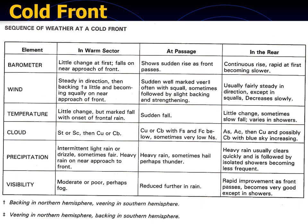At a cold front, weather includes rain and perhaps thunder, which increases during passage and then turns to showers. Precipitation in a cold front is more intense than at a warm front — it may last shorter in duration but is heavier and severely affects visibility. Whereas precipitation during a warm front is light and steady but lasts longer. Visibility during the passage of a cold front is generally poor but rapidly improves after the front has passed.